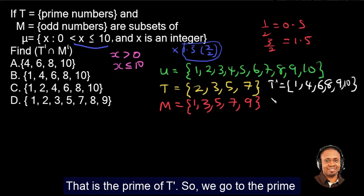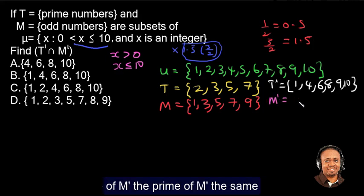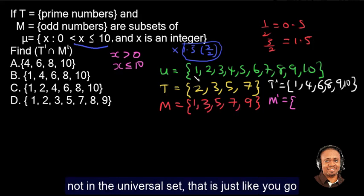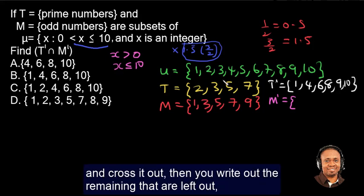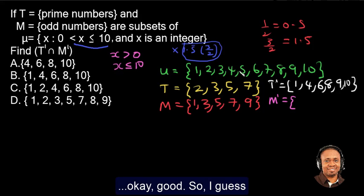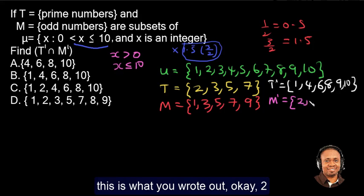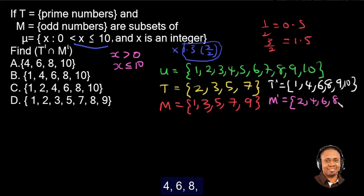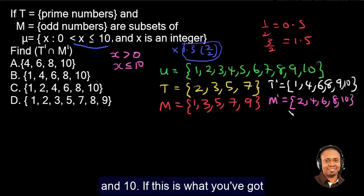So we go to the prime of M. The prime of M, the same, you look for elements that are not in the universal set. That is just like, you go and cross it out, then you write out the remaining that are left out. So by so doing, can you quickly do that on your own? I guess this is what you wrote out: 2, 4, 6, 8, and 10. If this is what you got, fantastic.